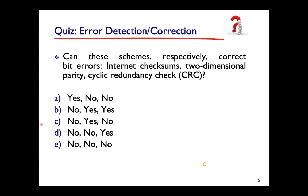A quiz asks: which of these can correct errors — internet checksum, two-dimensional parity, or CRC? The answer is: internet checksum — no correction; two-dimensional parity — yes, single-bit correction; CRC — no correction (only detection). So only two-dimensional parity among these three can correct errors.